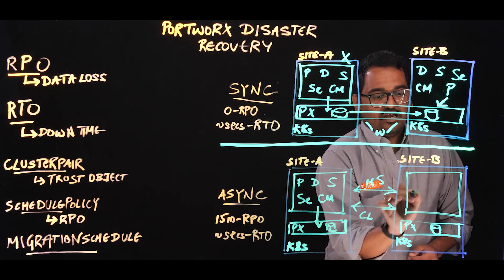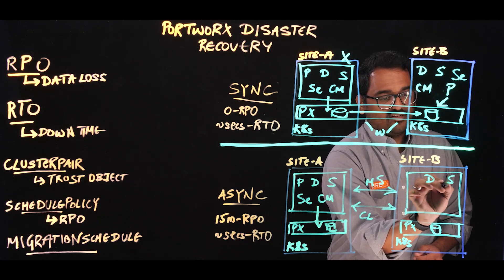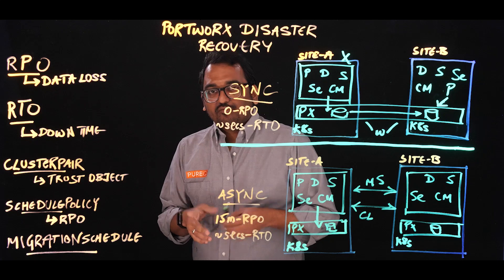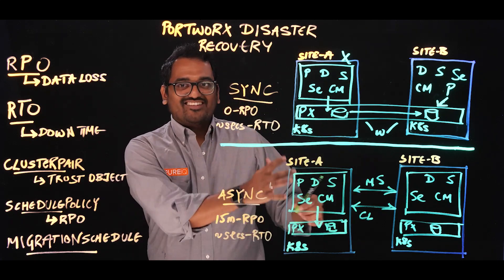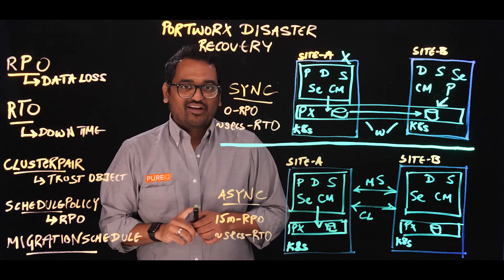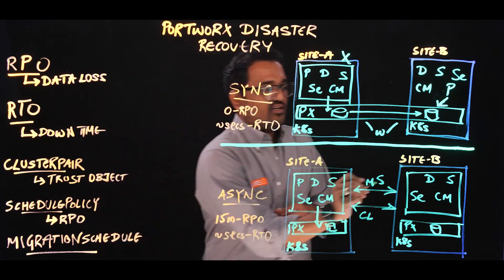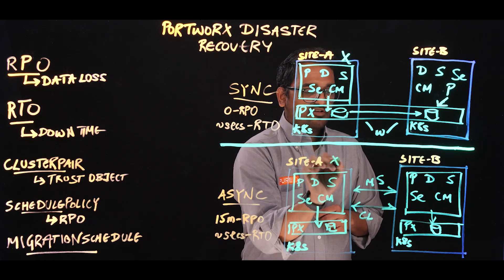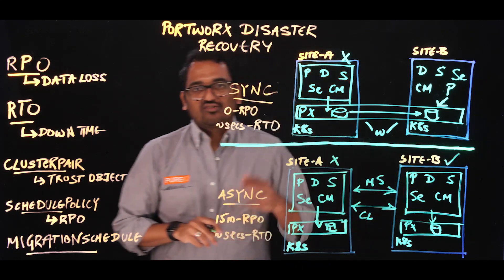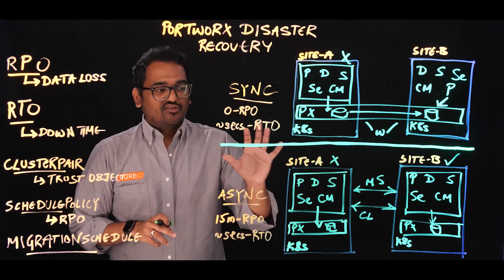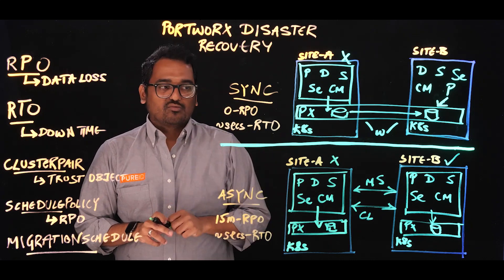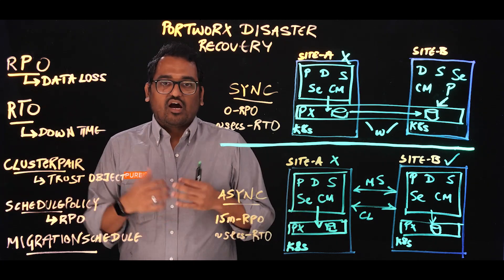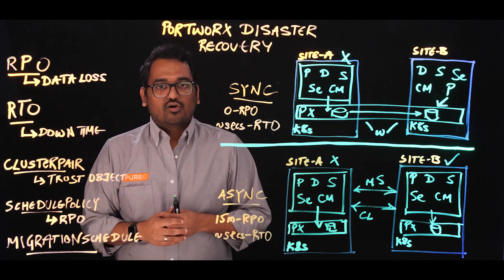In this case, I'll still have all my deployment objects, secrets, services, and config maps ready to go. As soon as a disaster strikes, I again run the same storkctl activate migrations command on my secondary site — that's when the Kubernetes pod gets deployed, the persistent volume gets mounted, and my applications come online on the secondary side. That's how asynchronous disaster recovery solutions with Portworx work, and it helps you build cross-region and cross-availability zone architectures for your applications running on Kubernetes.